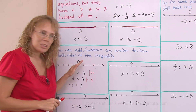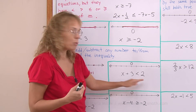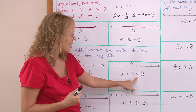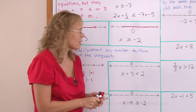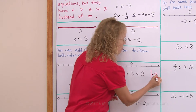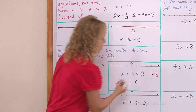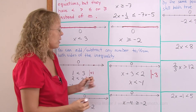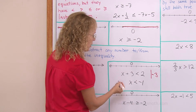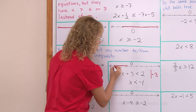For example, x plus 3 is less than 2. Think of it as an equation — you would subtract 3 from both sides to isolate x. We do the exact same thing here: subtract 3 from both sides. The sign does not change, and 2 minus 3 equals negative 1. So x is less than negative 1. Plotting it: negative 1 does not belong to the solution set, but all numbers less than negative 1 do — all the way to the left.